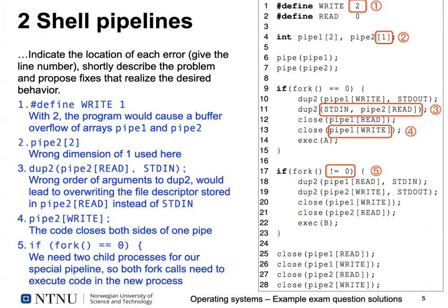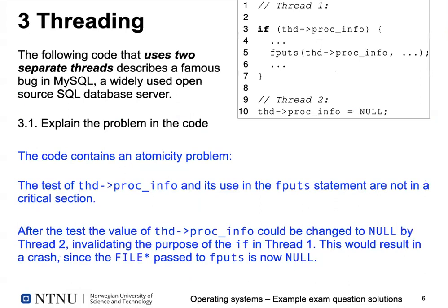So those are the five errors — five errors for five points. If you worked on your own shell implementation, there was some transfer of knowledge required, but I hope it was a reasonably clear question. Question three was about threading, and here we were especially checking if you understood critical sections.